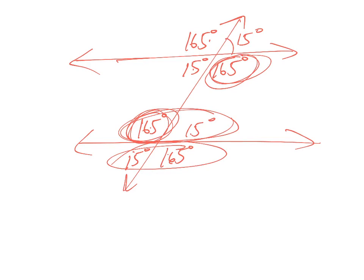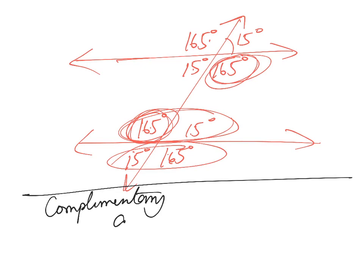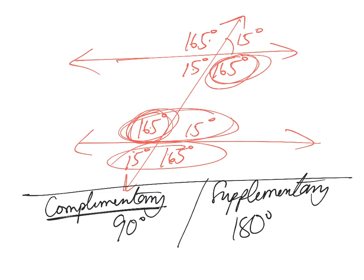So some things to keep in mind with angles. Before we leave this section on angles, let me remind us that complementary angles add up to 90 degrees, and supplementary angles add up to 180 degrees. If you're worried that you might not remember which one is which, just remember the letter C comes before the letter S. So 90 comes before 180. That's one way to remember complementary and supplementary.